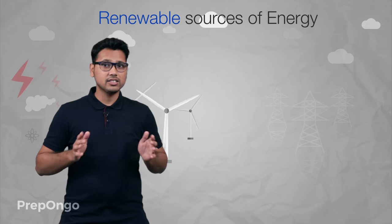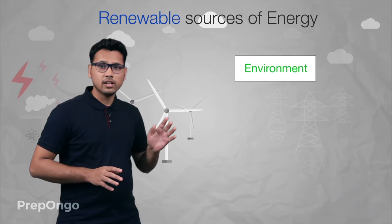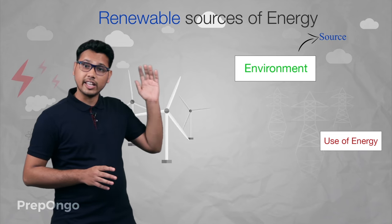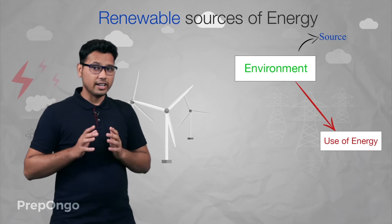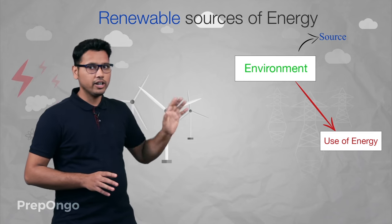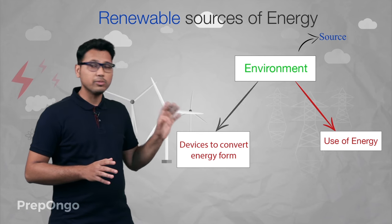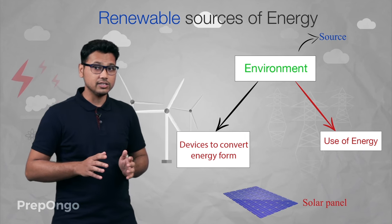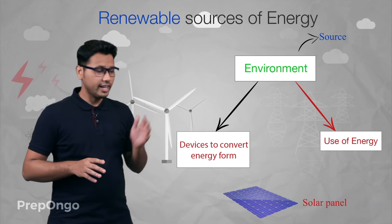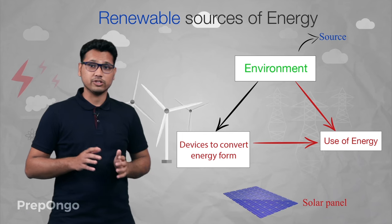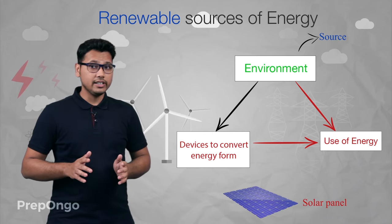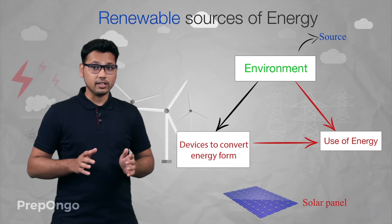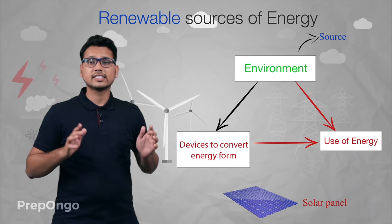Now if we try to understand the energy from renewable sources, we consider the environment as the source here. The energy from this environment is either used directly by us, or it is used indirectly — first being converted into some useful form of energy using a device like a solar panel or solar cells. So it is first converted into some form so that we could utilize it, and then transferred to a usable form using this device. Since energy is directly coming from the environment, we can say that as long as the sun, wind, or ocean are there, we will be getting this type of energy.